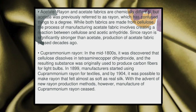Rayon and acetate fabrics are chemically different, but acetate was previously referred to as rayon, which has caused some confusion. While both fabrics are made from cellulose, the process of manufacturing acetate fabric involves creating a reaction between cellulose and acetate. Since rayon is significantly stronger than acetate, the production of acetate fabric ceased a decade ago.